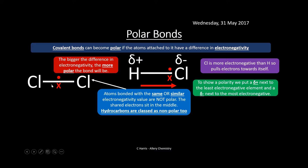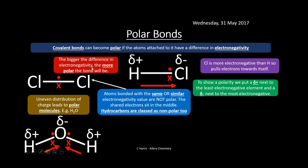Atoms which don't have this electronegativity difference are purely covalent and are therefore non-polar — the shared electrons sit right in between both atoms, not being pulled to either side. An uneven distribution of charge leads to polar molecules. You can see here with water — the charge is unevenly distributed, so we have a polar molecule.